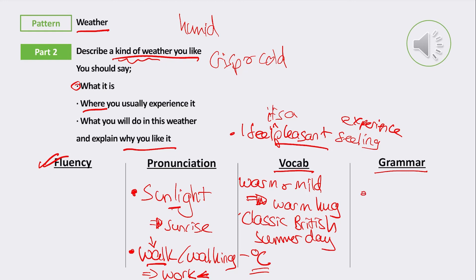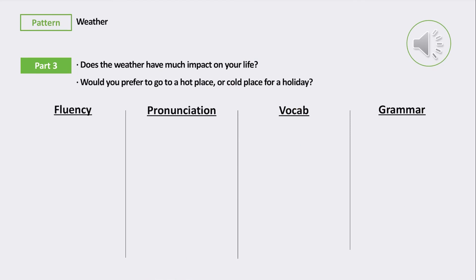The only real mistake I picked up on is that she talks about 'on the way work' when she needed to say 'on the way to work'. Everything else was pretty good. So let's see what she's done for the second question. The question is 'Does the weather have much impact on your life?' and 'Would you prefer to go to a hot place or a cold place for a holiday?'. This is a good chance to use more high-level vocabulary.